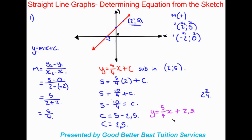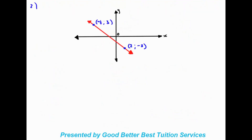So that was the first example. Important things to note: first work out the gradient and confirm it's positive based on the graph direction. Then write out the equation with the gradient. Substitute in any one of the two given points, work out c — the y-intercept — and write out the final equation.